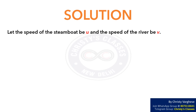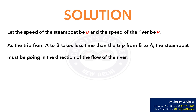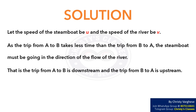Let the speed of the steamboat be U and the speed of the river be V. As the trip from A to B takes less time than the trip from B to A, the steamboat must be going in the direction of the flow of the river. That is, the trip from A to B is downstream and the trip from B to A is upstream.